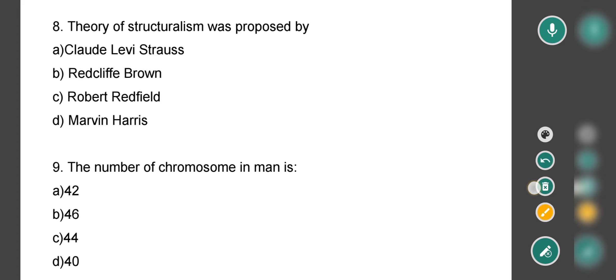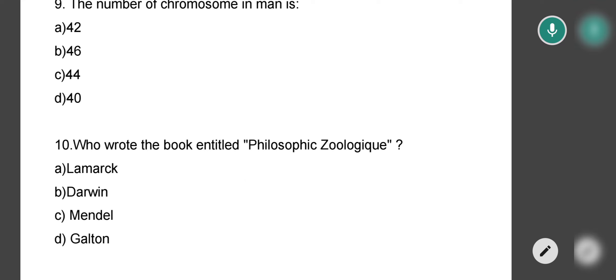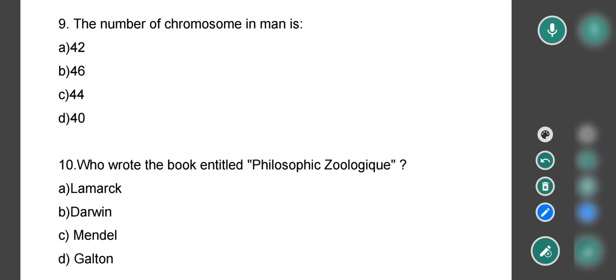The ninth question asks: The number of chromosomes in man is? What is the number of chromosomes in humans? Options are 42, 46, 44, and 40. The correct option is 46. How many chromosomes are there in humans? 46 chromosomes in 23 pairs. So if you ask in pairs, it's 23 pairs. And if you ask in numbers, it's 46 chromosomes.